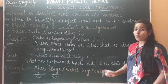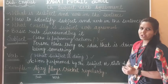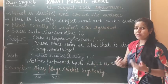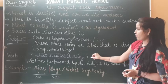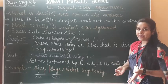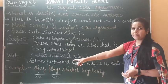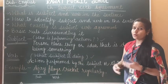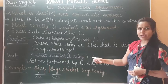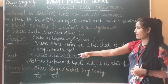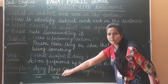In the sentence 'Ajay plays cricket regularly', who is performing the action? Yes — Ajay. So Ajay is the subject. For the verb, we ask what is the subject doing — subject क्या कर रहा है. Ajay plays cricket, so 'plays' is the verb.